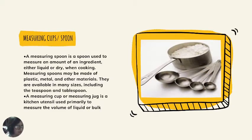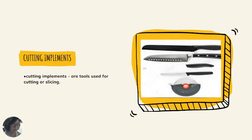Next: measuring cups. A measuring spoon is a device used to measure an amount of an ingredient, either liquid or dry. Measuring spoons may be made of plastic, metal, and other materials, and are available in many sizes, including the teaspoon and tablespoon. A measuring cup or measuring jug is a kitchen utensil used primarily to measure the volume of a liquid. Next: cutting implements — tools used for cutting or slicing.